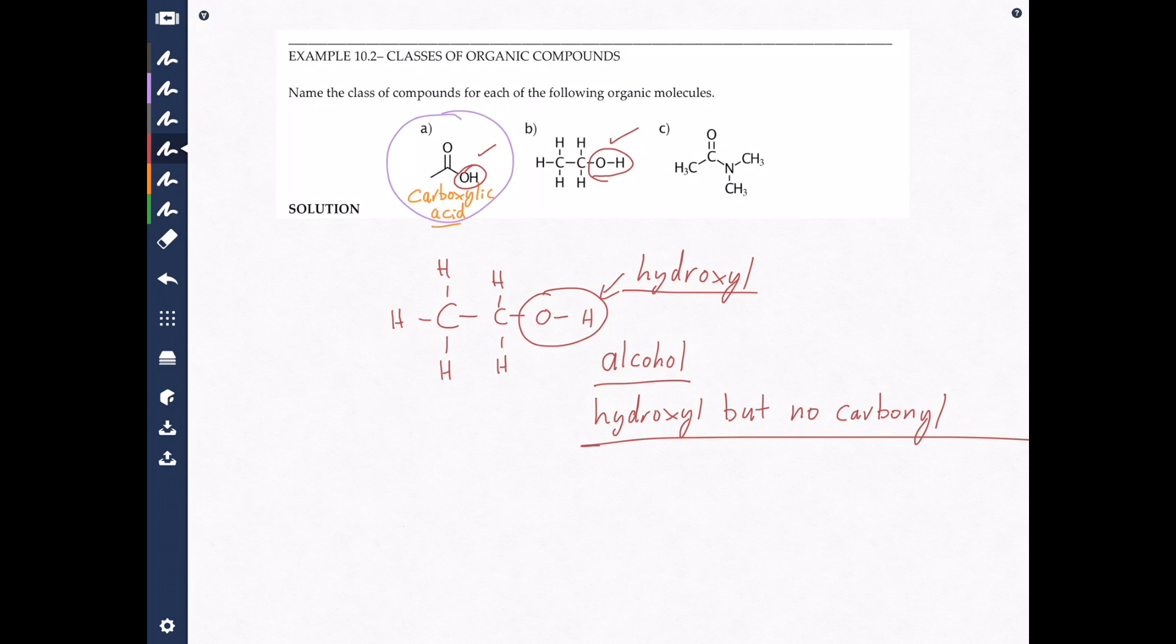There's only a few classes of compounds that you have to know that have hydroxyl. One is the carboxylic acid and the other one, if you look in your lab manual, is alcohol. Alcohols also have a hydroxyl but do not have a carbonyl. Whenever you have a hydroxyl and no carbonyl, but a bunch of carbons and hydrogens, that's going to be an alcohol.